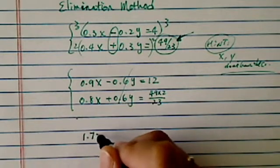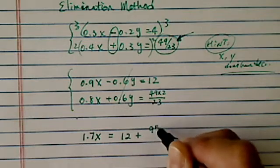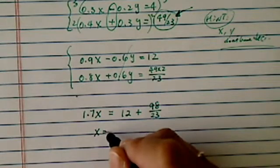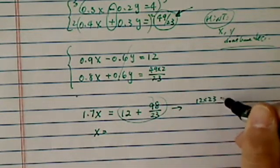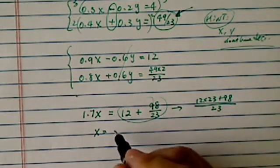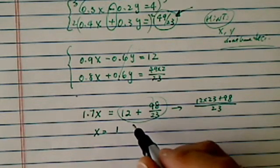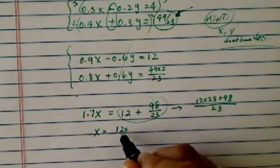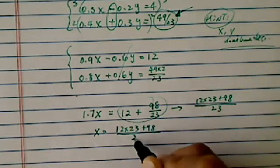So adding those two, I have 1.7x is equal to 12 added, this is 98 over 23. So x is equal to, let's add this one out. So I have 12 times 23 plus 98 on top divided by 23. 12, I believe this one actually turned out to be 374, but let's write it for now.